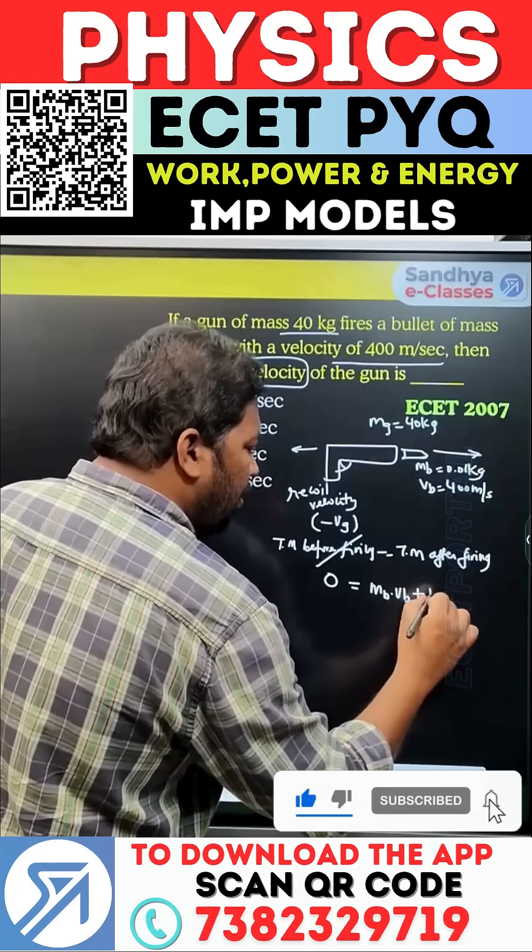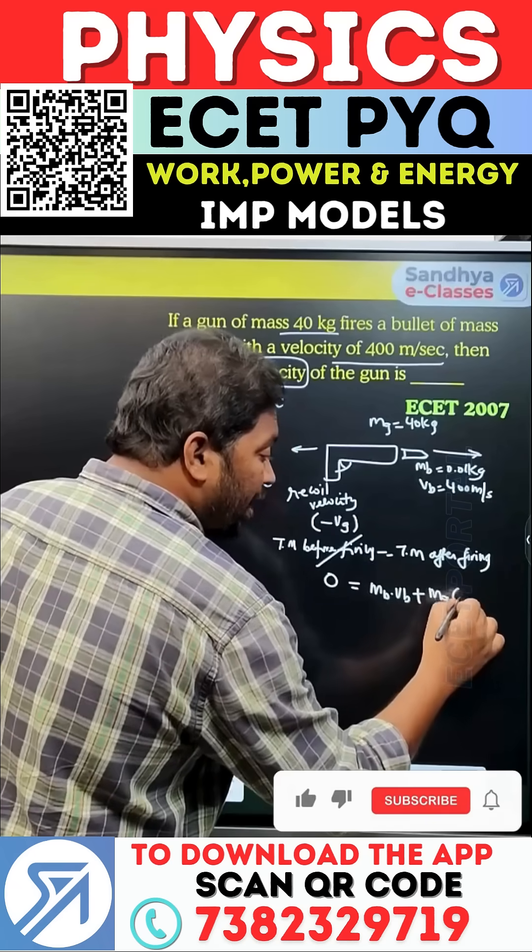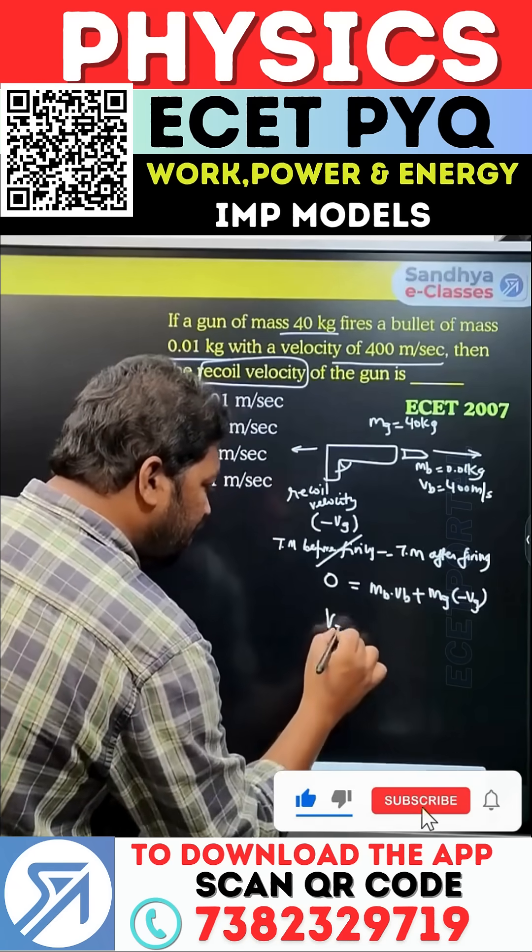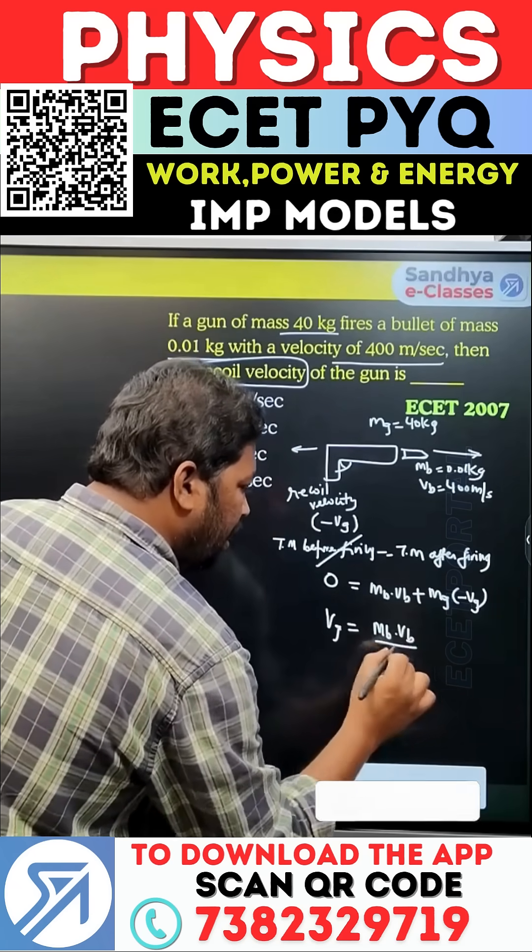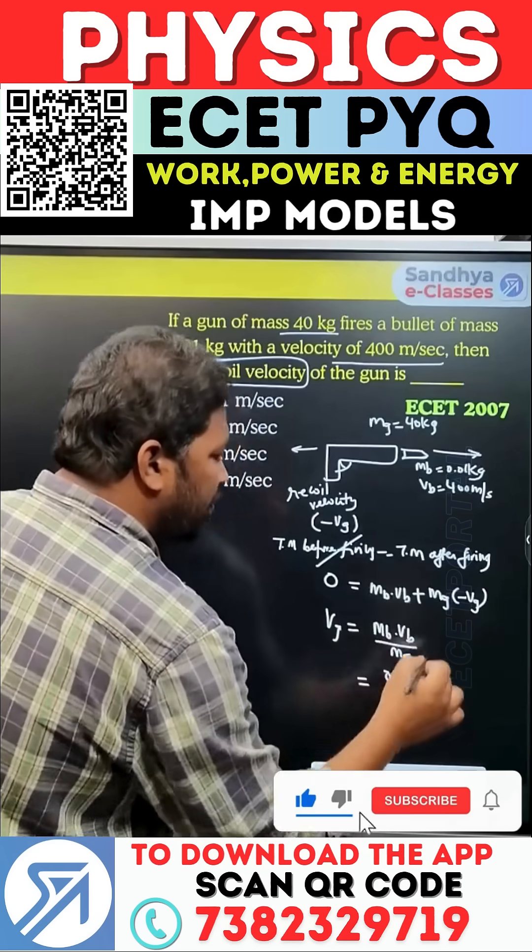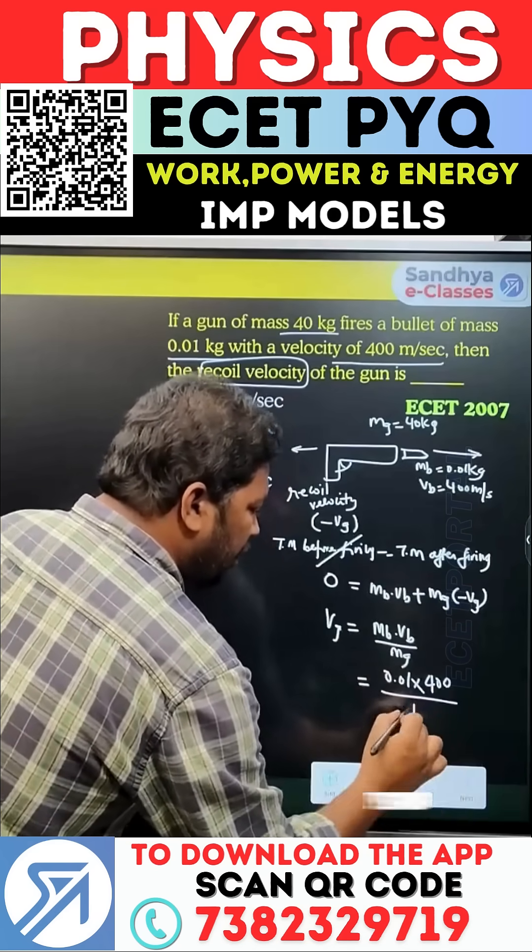Mass of bullet times velocity of bullet plus mass of gun times recoil velocity. So recoil velocity equals mass of bullet times velocity divided by mass of gun: 0.01 times 400 divided by 40.